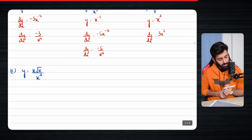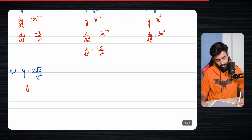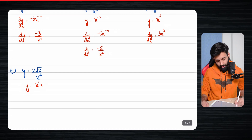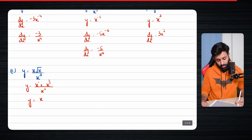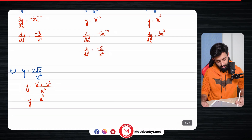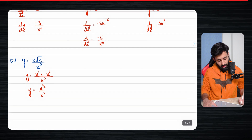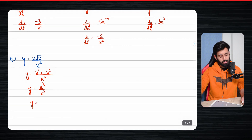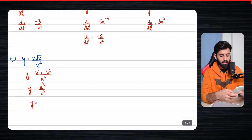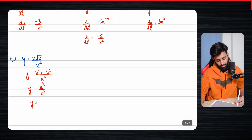Now comes part t, which is y equals x times square root of x over x cubed. This has some simplification too. So x times x to the power half over x cubed. Step by step: 1 plus half equals 3 over 2, over x cubed. Using the rule of indices, same bases are being divided so powers get subtracted. 3 over 2 minus 3 gives us y equals x to the power minus 3 over 2.